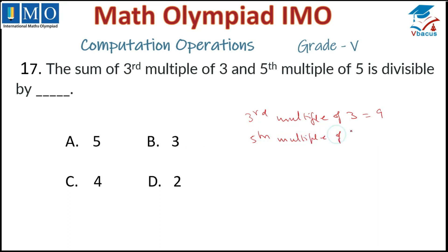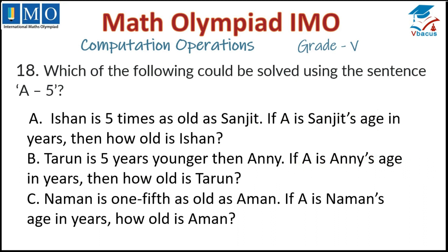So third multiple of 3 is 9. Fifth multiple of 5 is 25. And sum, 25 plus 9 equals 34. So divisible by 2 because this is an even number. And it can't be divided by 5, 3, or even by 4. It is divisible by 2. That is in option D. So option D is correct.